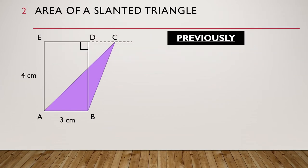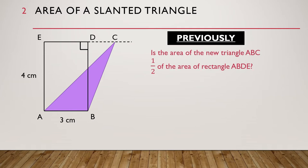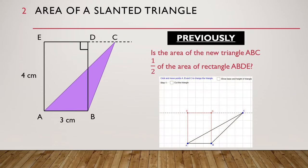Previously, on area of a triangle, we had a slanted triangle ABC and a rectangle ABDE as shown. There was a question: is the area of the new triangle ABC half of the area of rectangle ABDE? You did a GeoGebra activity to explore the answer to the question. If you have not done it yet, please go to the previous video to do it.